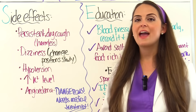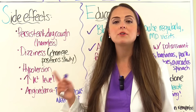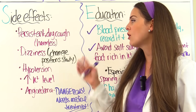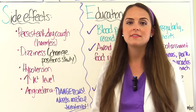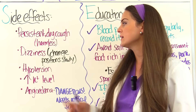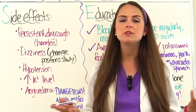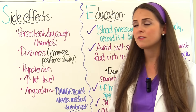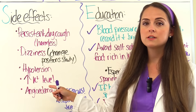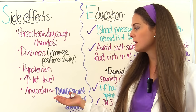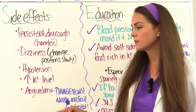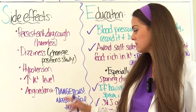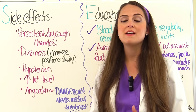Side effects of ACE inhibitors include: a persistent dry hacking cough related to bradykinin, which is usually harmless; dizziness due to blood pressure changes — advise patients to change positions slowly to avoid falls; hypotension from the blood pressure lowering too much; hyperkalemia from increased potassium levels; and angioedema — that dangerous deep-tissue swelling that requires immediate medical treatment.